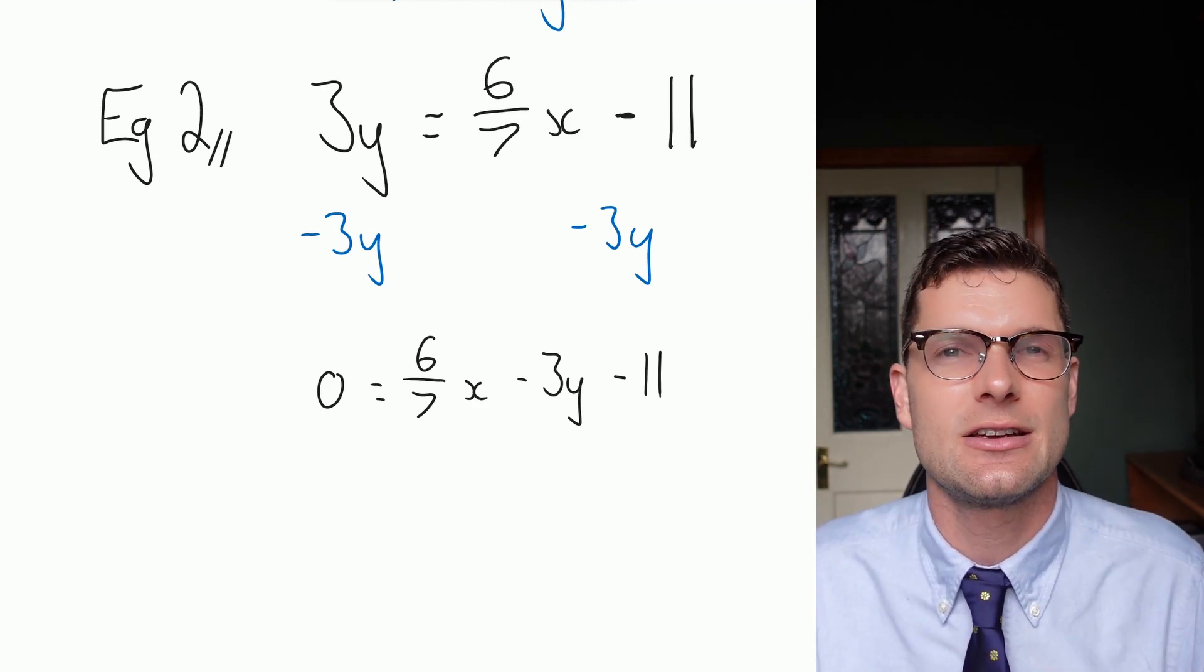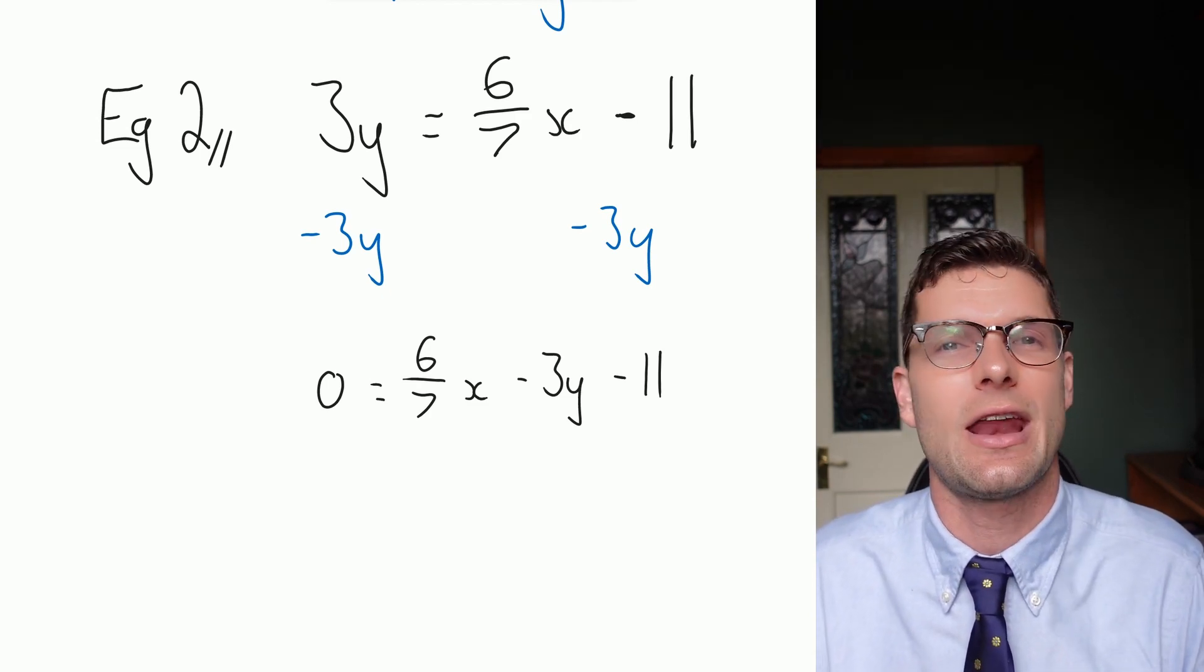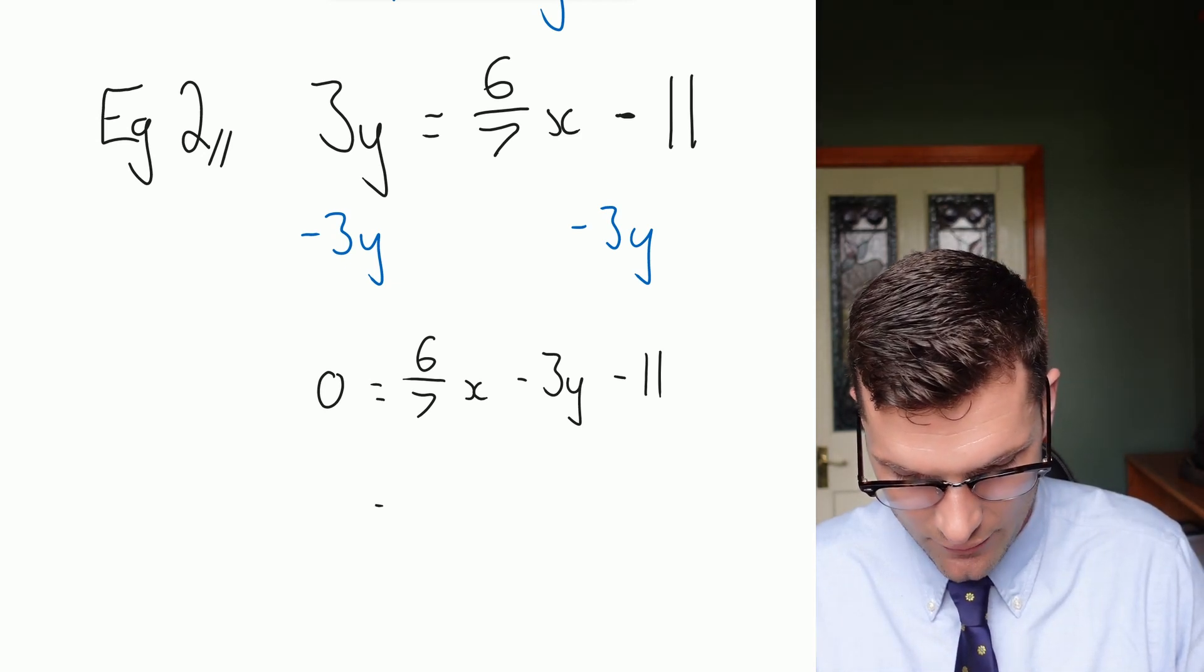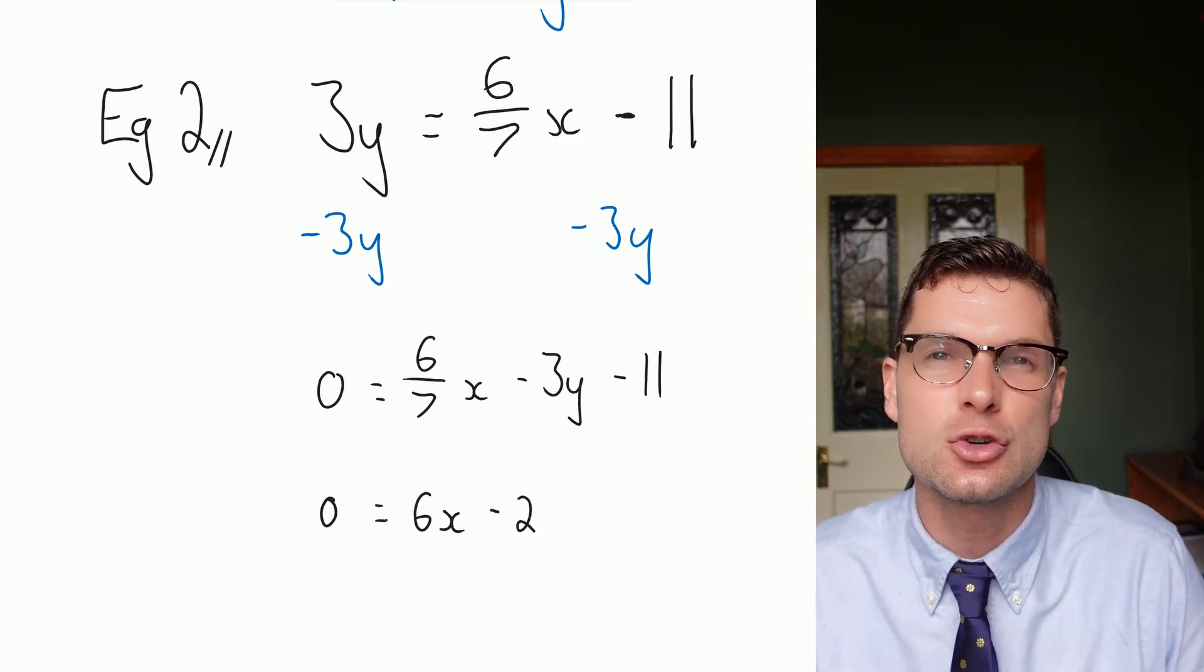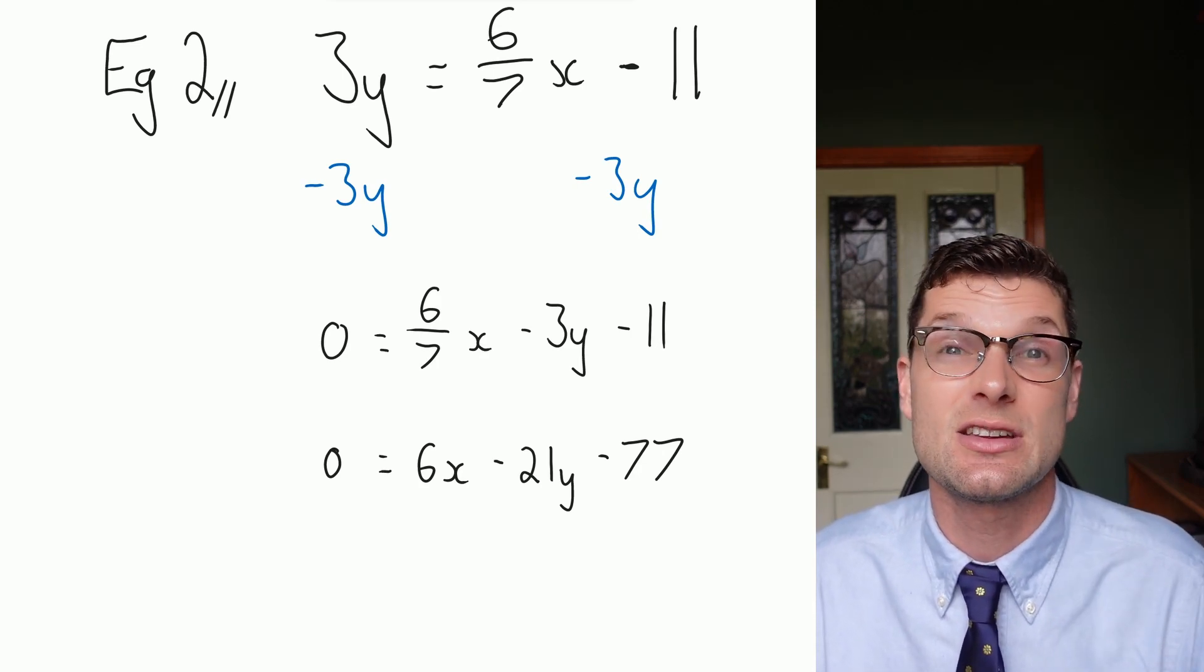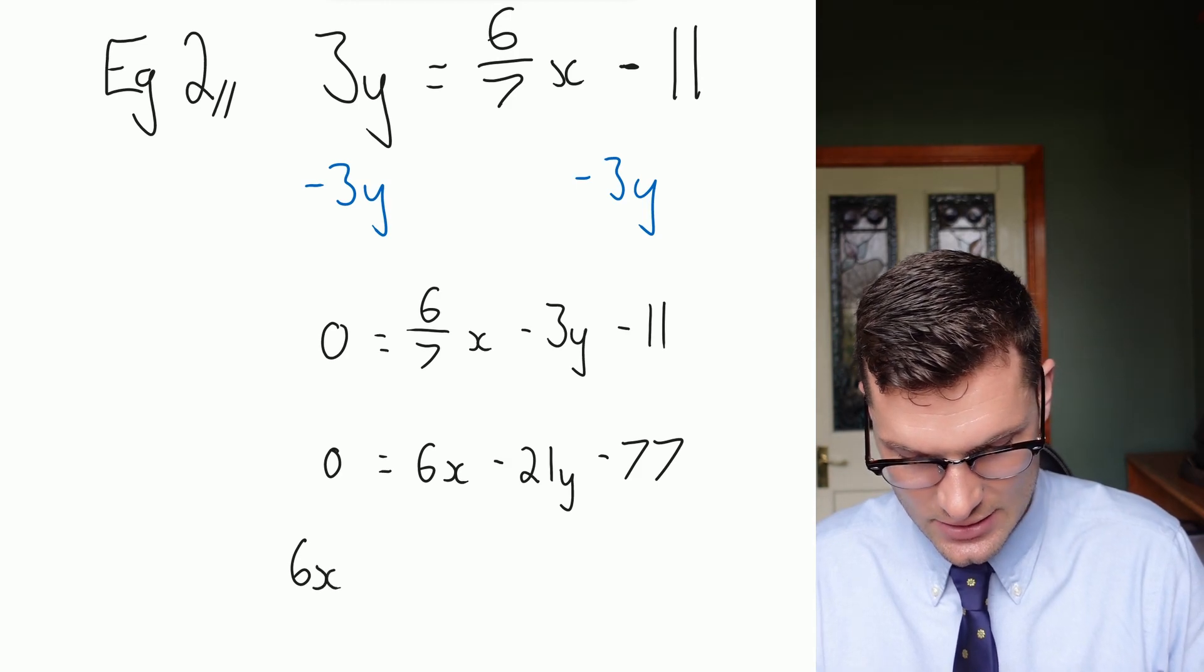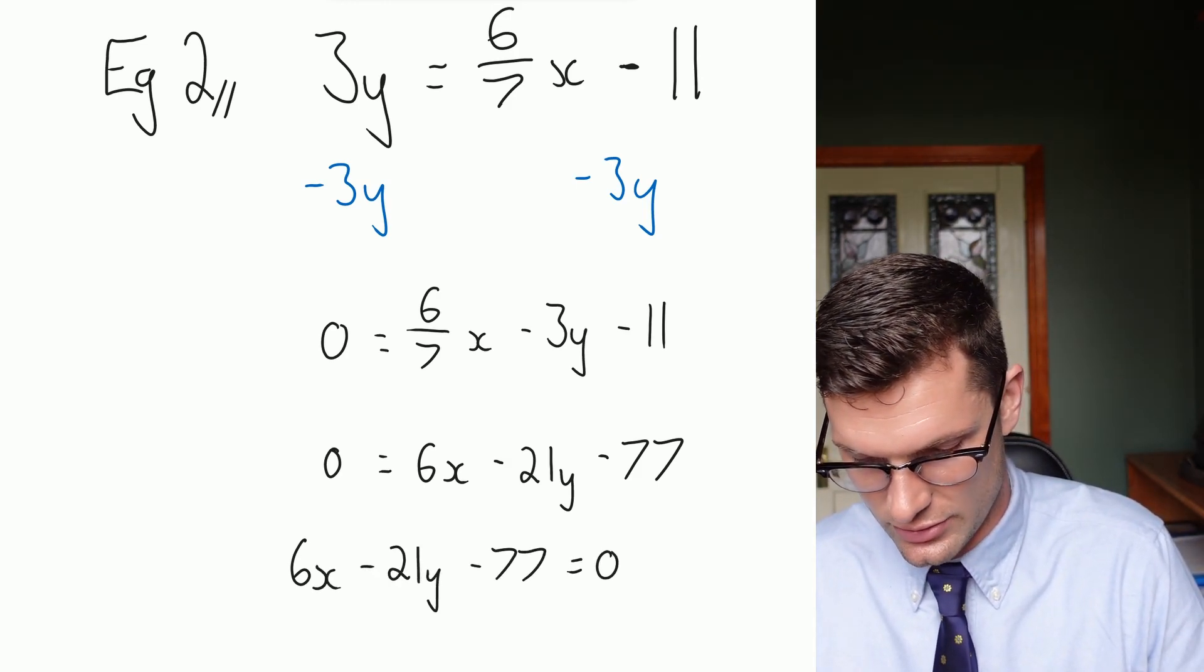So if I multiply every single term here by 7, I can get rid of the fraction and know that I'm going to have whole numbers the rest of the way. So once I multiply everything by 7, I've got 0 = 6x - 21y - 77. Just to make sure I've got the zero on that right hand side, I'm going to rewrite it just to make sure that your teacher doesn't think you've made a mistake. And I've got 6x - 21y - 77 = 0.